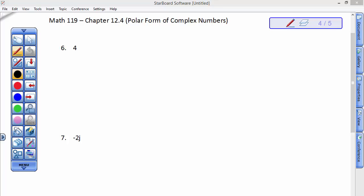Well, gee willikers, how do we write a complex number that just has a real part, the number 4? And so its imaginary part is 0j. How do we write that in polar form?